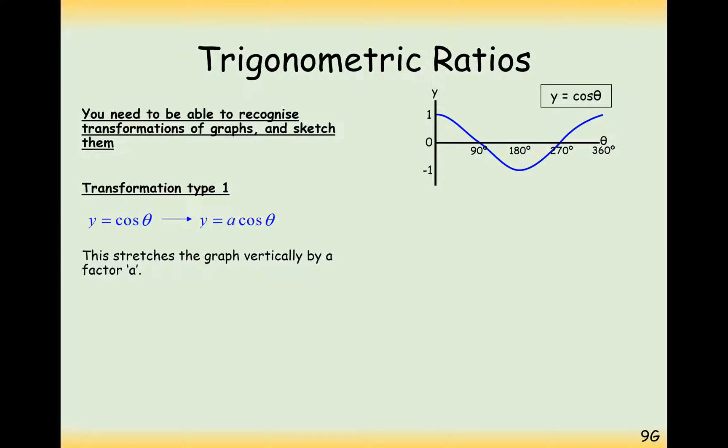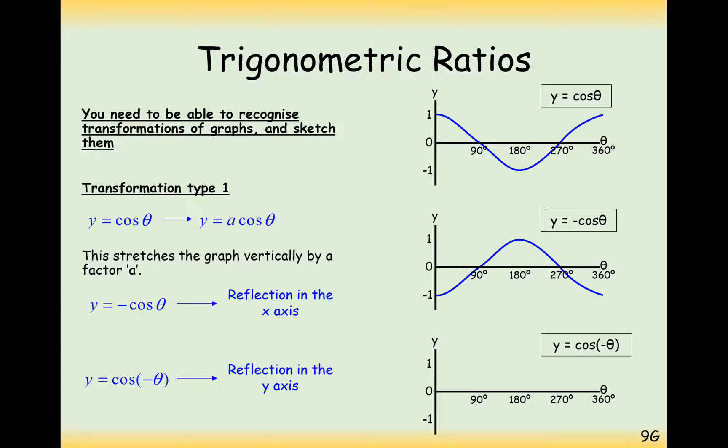Same thing works for cos if we want to stretch it vertically upwards and downwards by a factor, we times it by a at the front. Minus cos theta will reflect it in the x-axis like this. And cos of minus theta will reflect it in the y-axis and it will look like this. It looks exactly the same as it did before and that's because if we were to continue on this graph here, we would see exactly the same thing on the left and right. Effectively, it's symmetric about the y-axis.